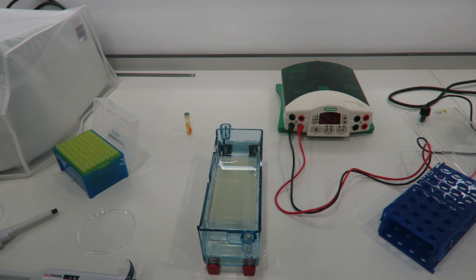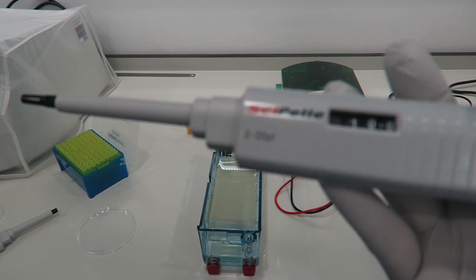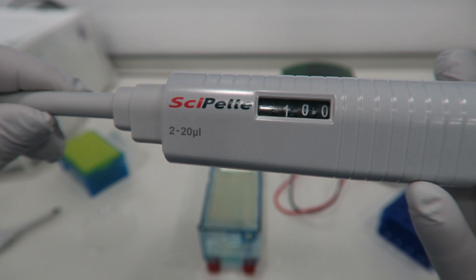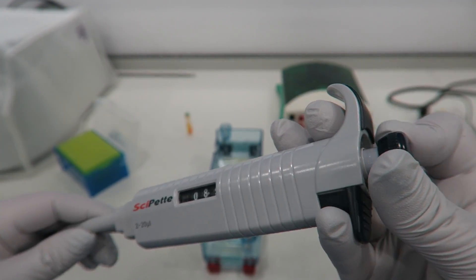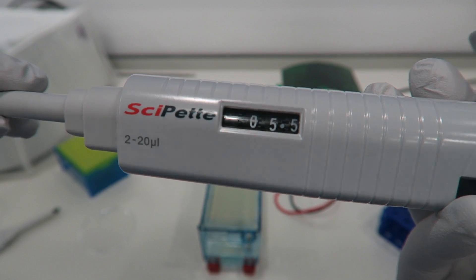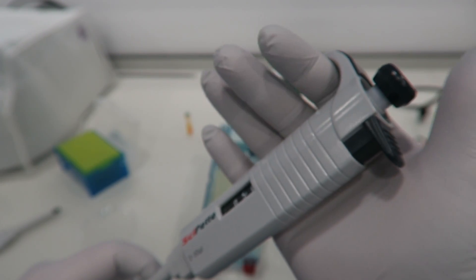Loading a gel takes a lot of care and attention. It involves very small volumes on pipettes. This pipette will do between two and 20 microliters. You need to set the amount you want. This is generally between five and 10 microliters of your sample.